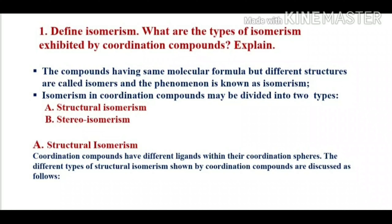What is meant by isomerism? The compounds having the same molecular formula but different structures are called isomers, and the phenomenon is known as isomerism. Isomerism in coordination compounds may be divided into two types: structural isomerism and stereoisomerism.